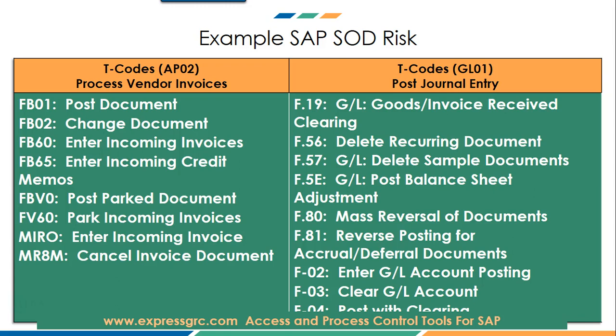In this example, one combination of transactions is process vendor invoices. The second combination of transactions is post journal entry. What this SOD risk means is that any transaction on the left hand side cannot be combined with any transaction on the right hand side. That is what is called the segregation of duties risk.